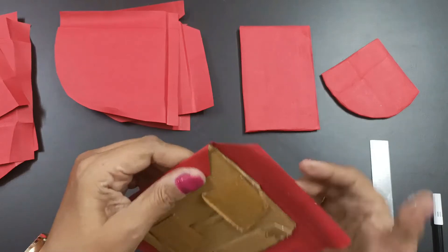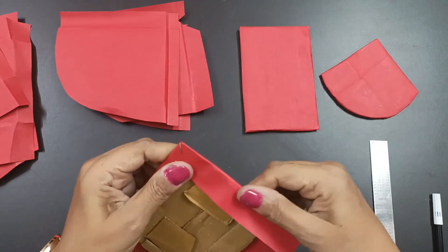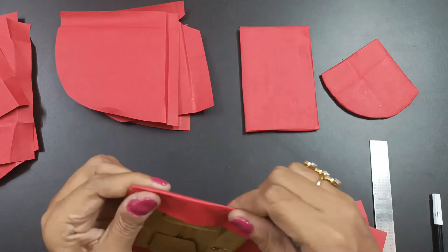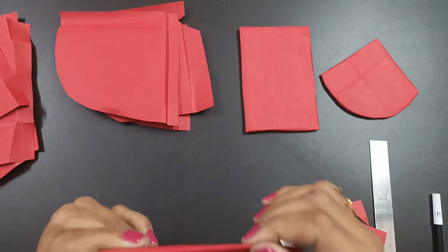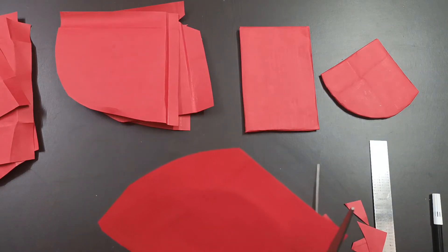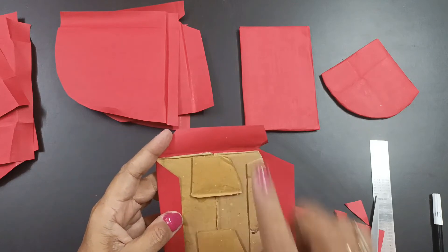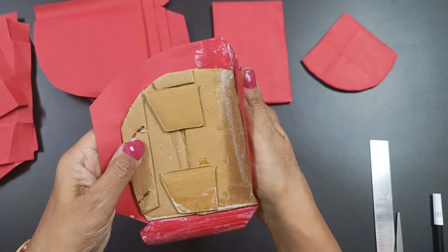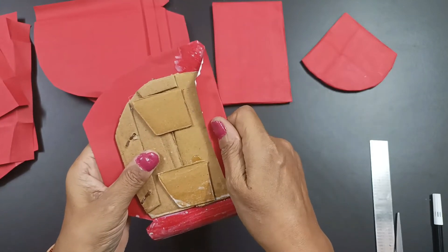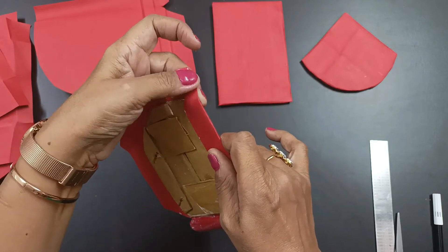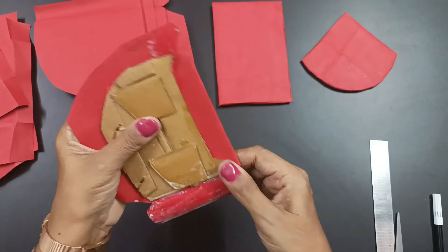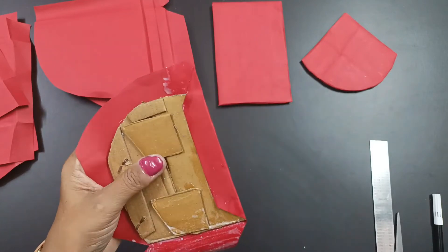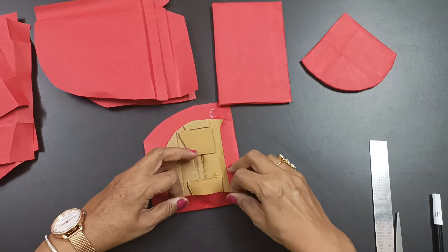We'll stick this, press it here. The same way I'll do here also so that the cardboard is not seen from anywhere like this. Press this again. I'll mark this.